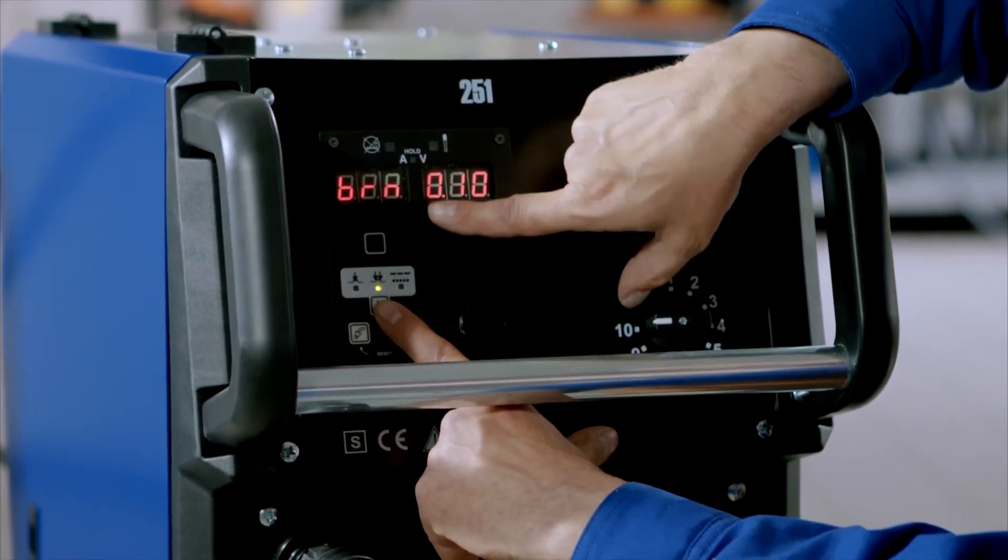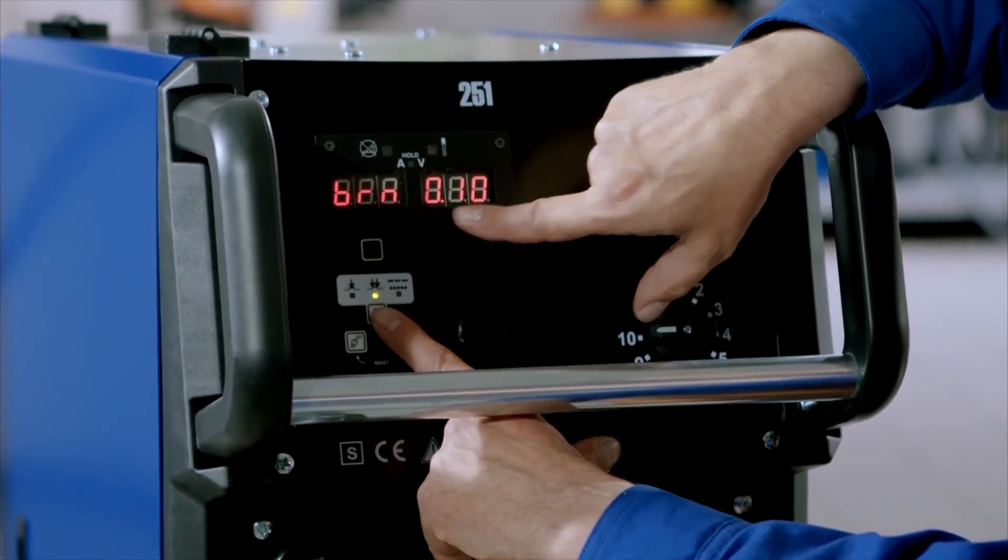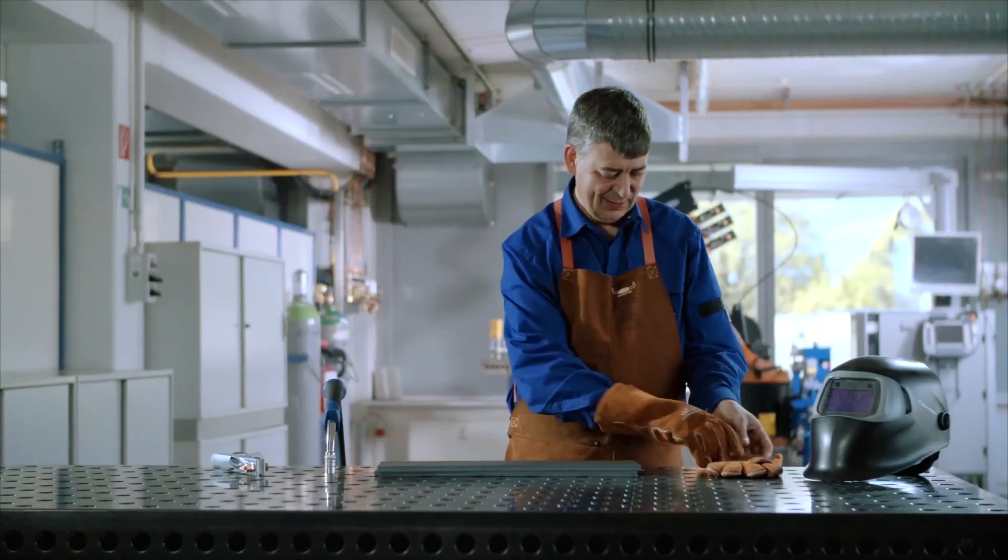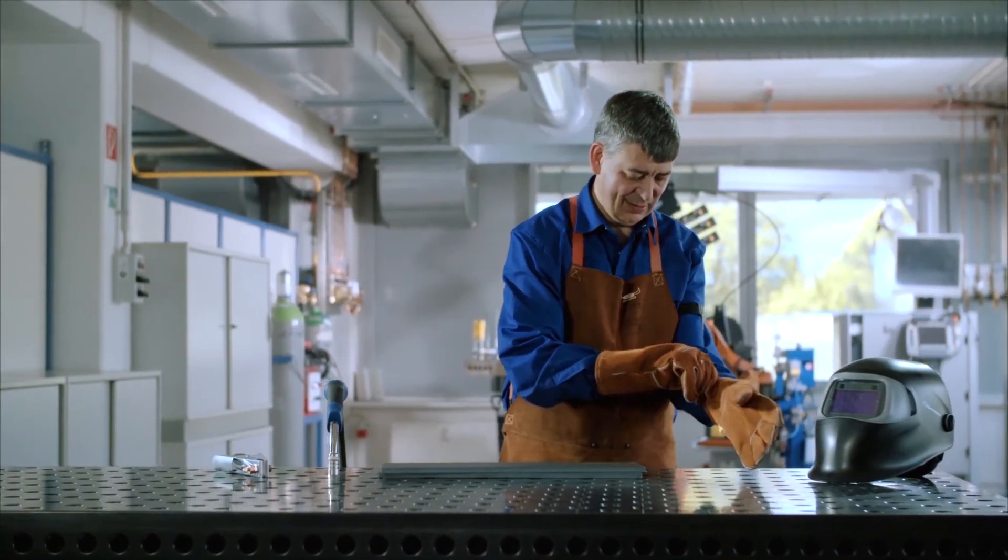The final setting is for burn back. This prevents the consumable from burning onto the contact tube or the workpiece. And that's all there is to it. Once these settings have been made, the device is ready for welding.